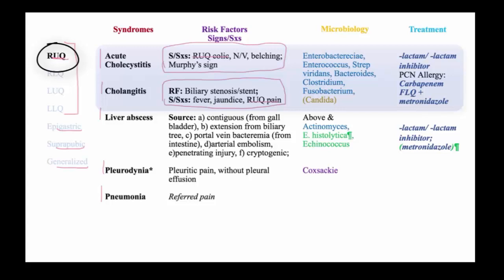Cholangitis occurs in the context of biliary stenosis, stent, or instrumentation of the gallbladder. In both cases, the microbiology is similar, with Enterobacteriaceae predominant, but also Enterococcus, Strep viridans from the mouth, anaerobes such as Bacteroides, Clostridium, and Fusobacterium, and occasionally Candida albicans, all of which are prevalent in the upper GI tract.